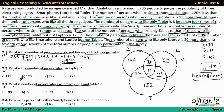The third question: what is the number of people who like smartphone and tablet? Smartphone and tablet covers the region 77 + 11 = 88. So option A is the correct answer.